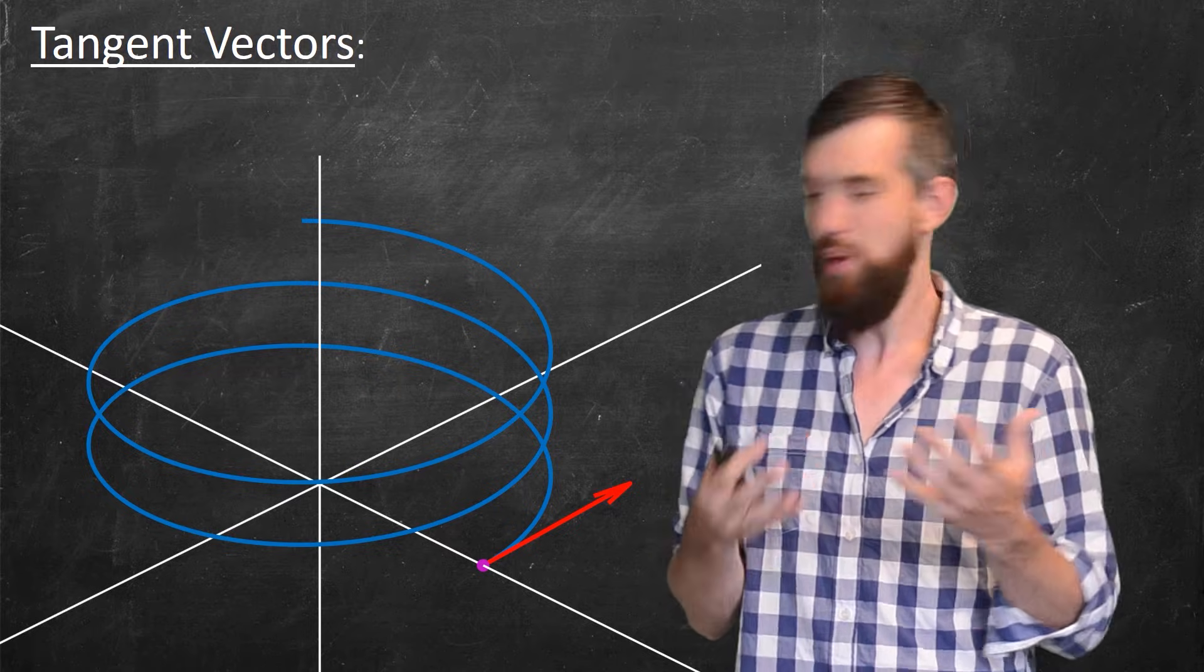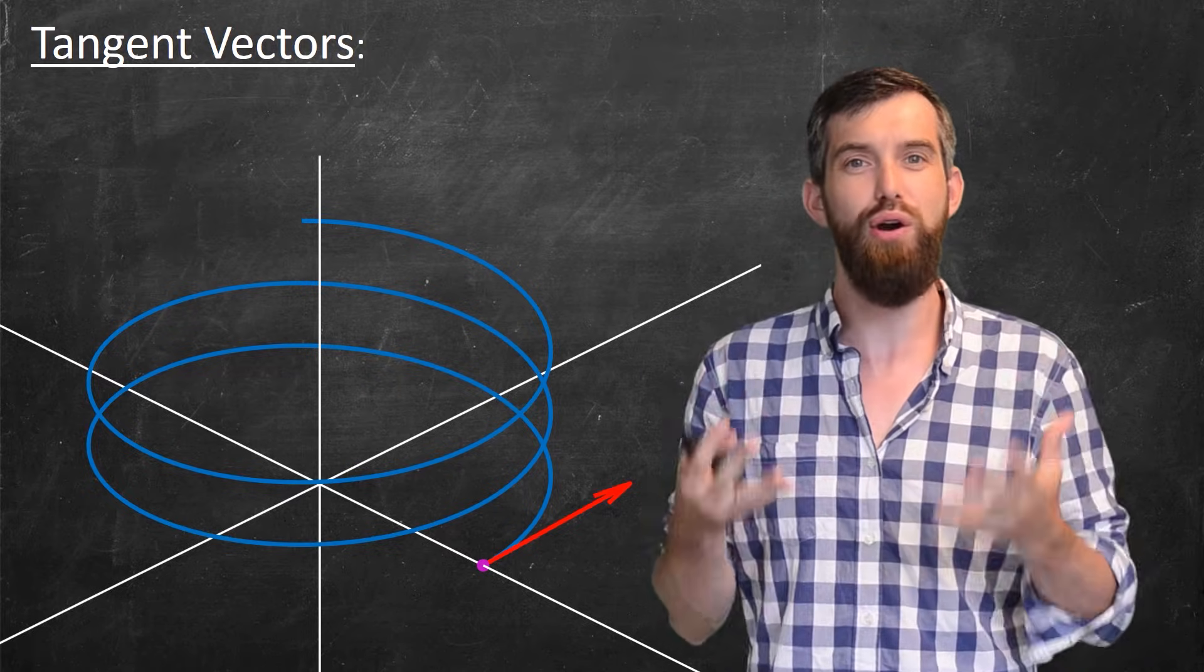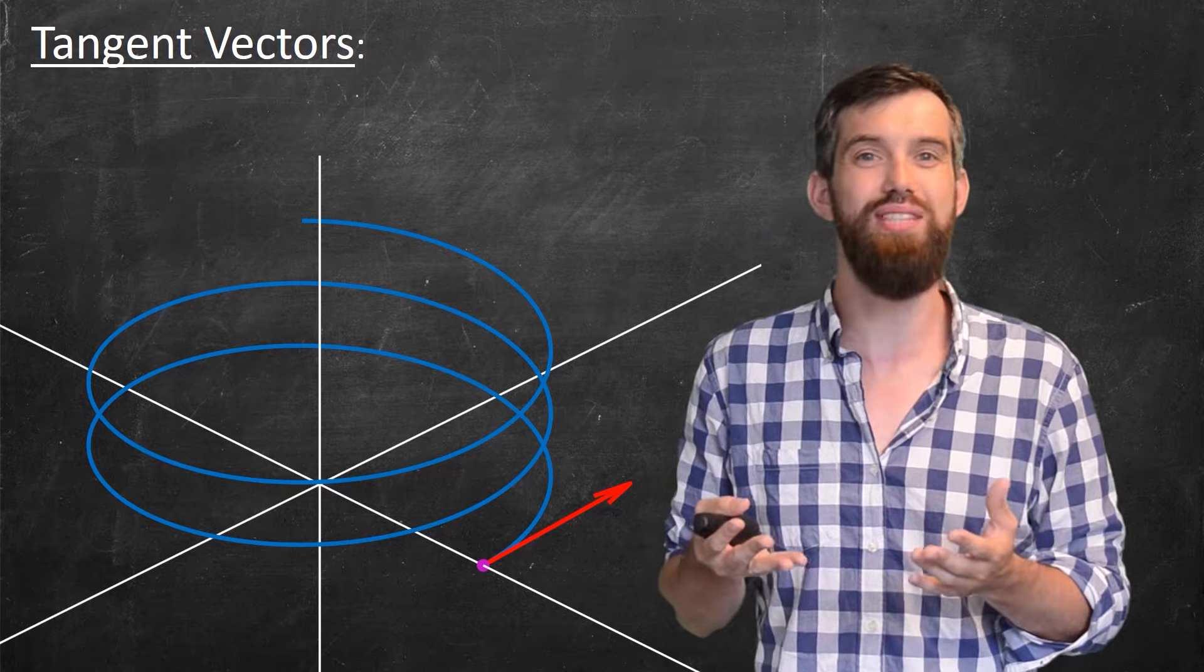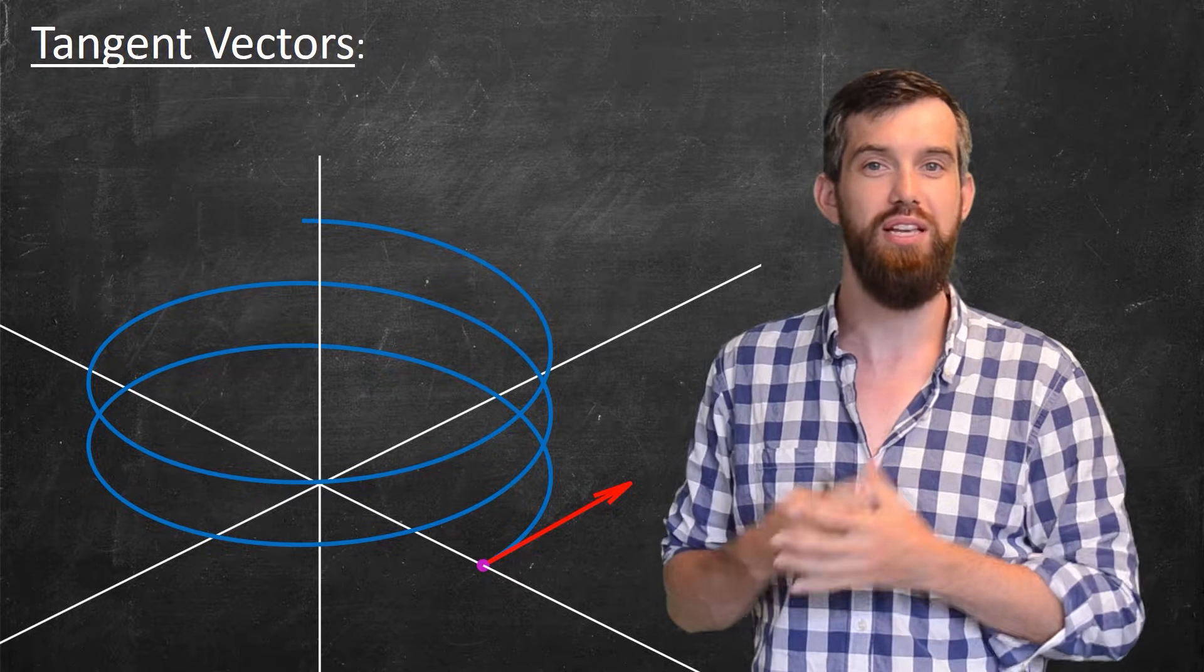And a tangent vector looks like this. It's telling me the direction where the curve appears to be going at that moment. It sort of tells the analog what the slope was when we were talking about just graphs in two dimensions.